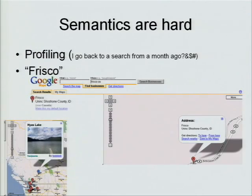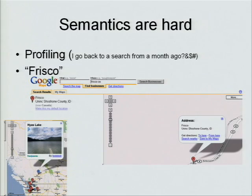Semantics are hard. You say 'Frisco CA' and it finds Frisco, Indiana. I'd like to get San Francisco obviously. That's not a big surprise.